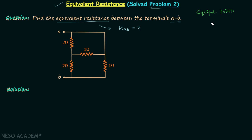What are these equipotential points? These are the points having the same potential. In our network, let's say V_A is the potential at terminal A. Therefore this point will have the same potential and we call it point A. This point will also have the same potential V_A, so we call it point A as well. They have the same potential because they are connected by an ideal conductor — there is no element in these wires.